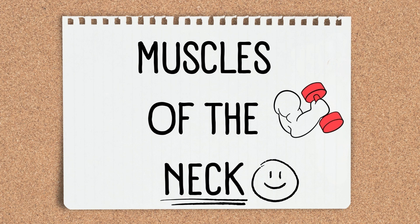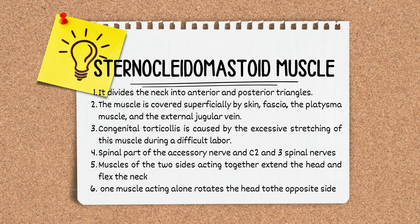We are starting today with the muscles of the neck. One of the key muscles of the neck is the sternocleidomastoid muscle. The important thing about this muscle is it divides the neck into anterior and posterior triangles. This muscle is covered superficially by skin, fascia, the platysma muscle, and the external jugular vein. Excessive stretching of this muscle during a difficult labor causes congenital torticollis.